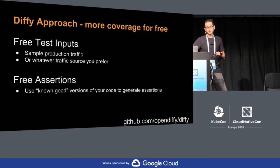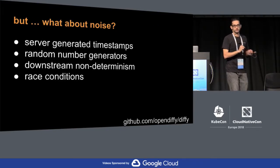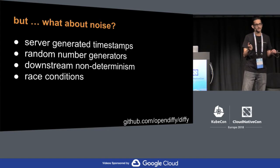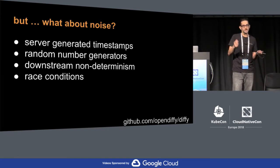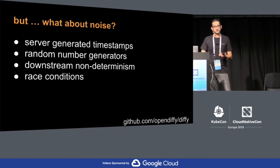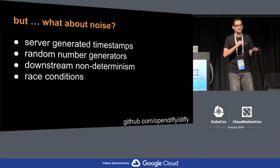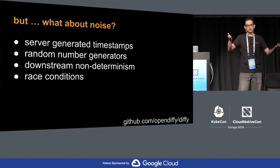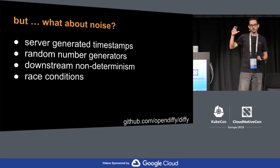There's still one other problem: what if these two responses contain some information that's noisy in nature? What if there's non-deterministic behavior within the application, and that noise will always bubble up as an unwanted change? Examples are server-generated timestamps, random number generators, downstream non-deterministic behavior, or any race condition — that's not your business logic's mistake.